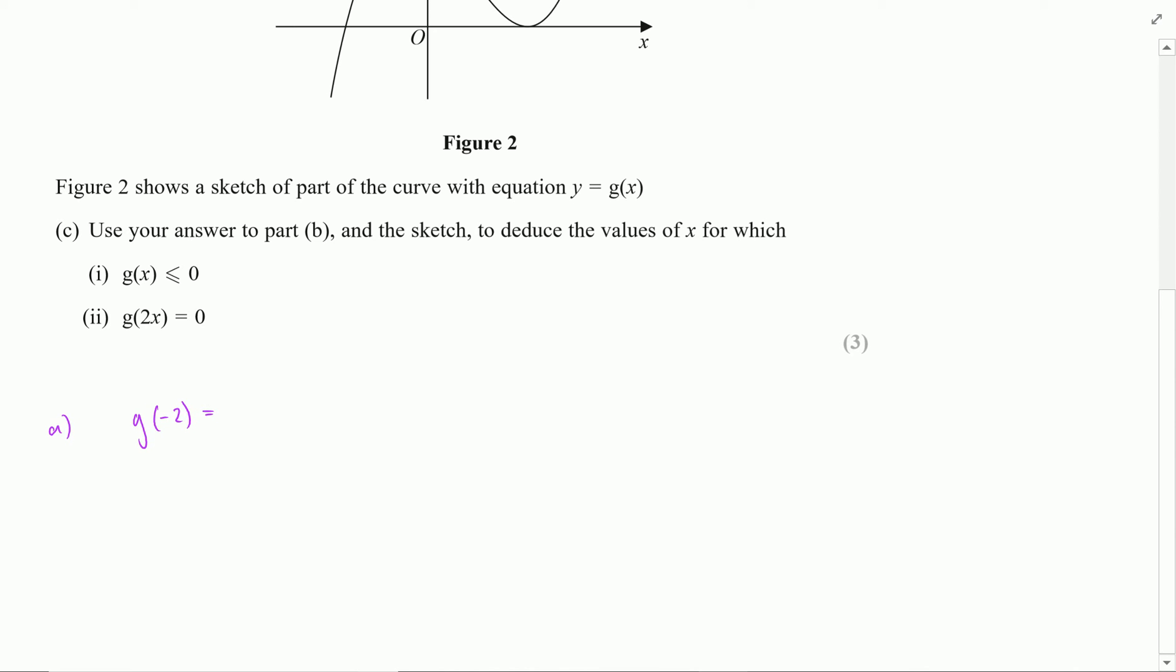Now we can't just put down 0 immediately, we have to show some level of working here. So let's just show that we've substituted that in which is going to be then 4 times minus 2 cubed minus 12 times minus 2 squared minus 15 times minus 2 plus 50.